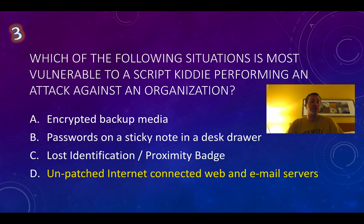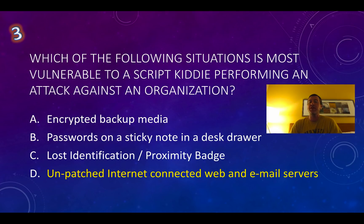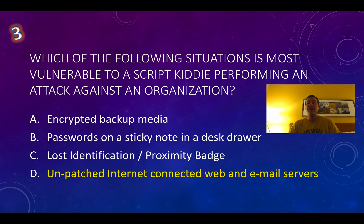Which of the following situations is most vulnerable to a script kiddie performing an attack against an organization? This is going to be unpatched internet-connected web and email servers. There are all sorts of tools that script kiddies can use to attack these. A proximity badge isn't really going to be targeted by a script, and a password on a sticky note or encrypted backup media — assuming it's offline — also won't be targeted. Unpatched internet-connected web and email servers are definitely a good target for a newbie or noob to the hacking or IT security world. So the answer is D.